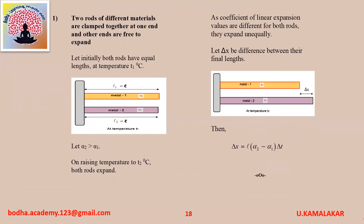Two rods of different materials are clamped together at one end and the other ends are free to expand. Initially both rods have equal lengths at temperature T1°C. Let alpha2 be greater than alpha1. On rising temperature to T2°C, both rods expand but, since their coefficients of linear expansion are different, they expand unequally. Let delta X be the difference between their final lengths. Then delta X equals L into (alpha2 minus alpha1) into delta T.